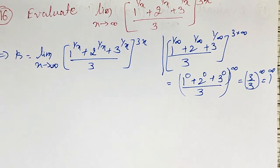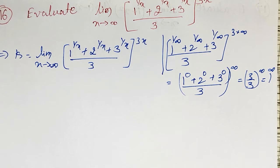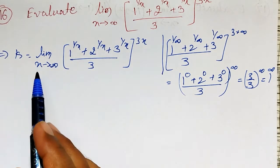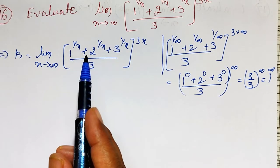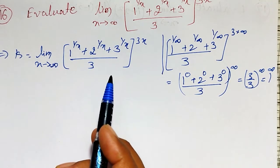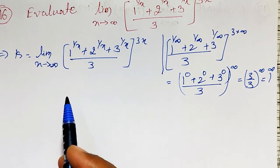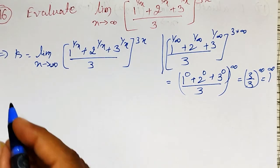To evaluate this, I have to apply log on both sides so that we can reduce it into 0/0 form or ∞/∞ form. But here, as x tends to infinity, whenever the x term appears it will be lengthy to differentiate. To avoid that, let me put 1/x = t.